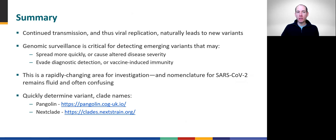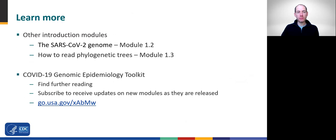This concludes Module 1.4. Part 2 of this toolkit contains case studies that review the use of genomics in response to COVID-19. Please visit the COVID-19 Genomic Epidemiology Toolkit page where you can find further reading on this topic. On the toolkit page, you can also subscribe to our mailing list and receive announcements as new modules and materials are released.